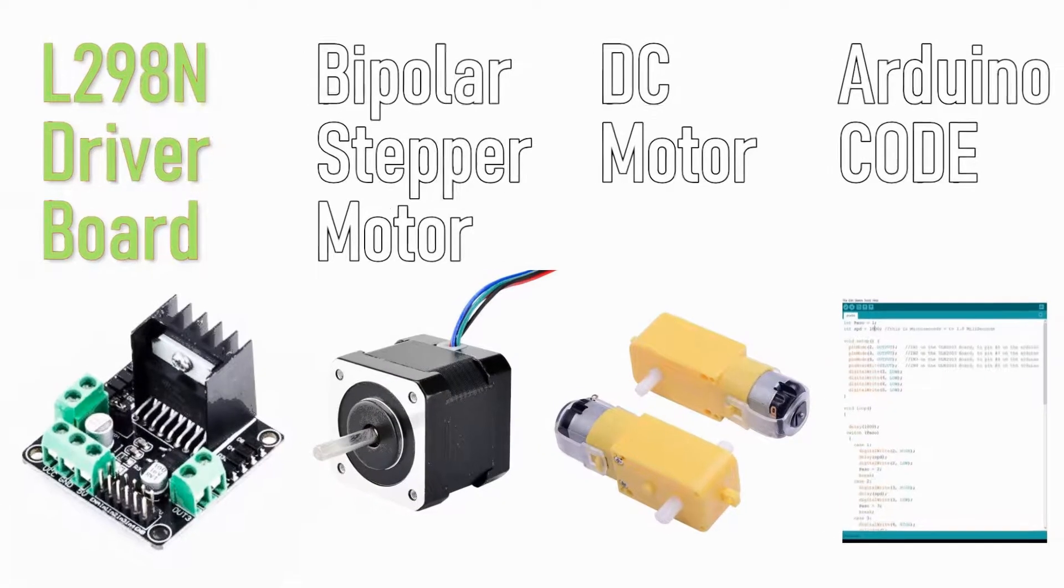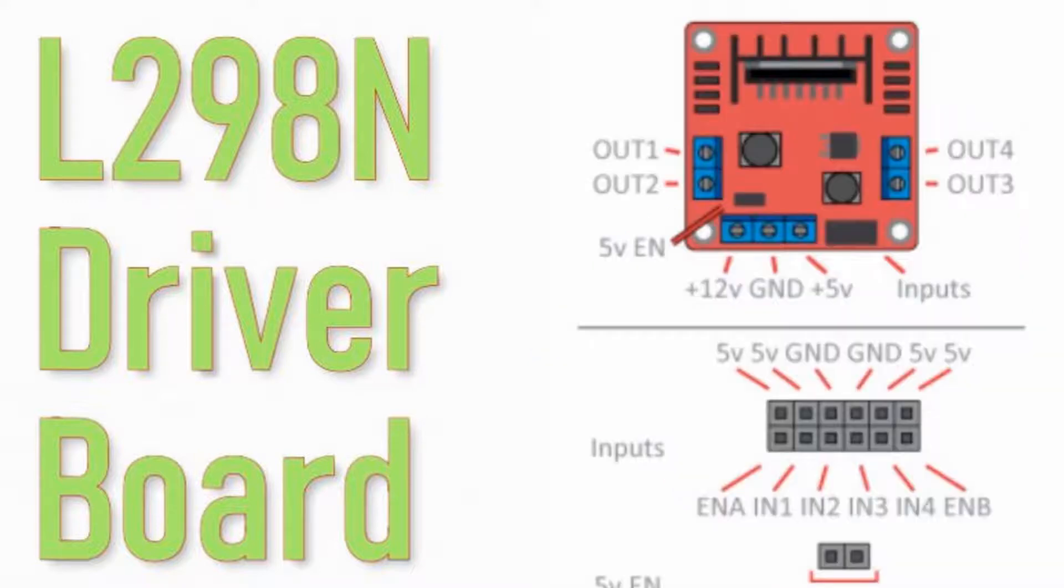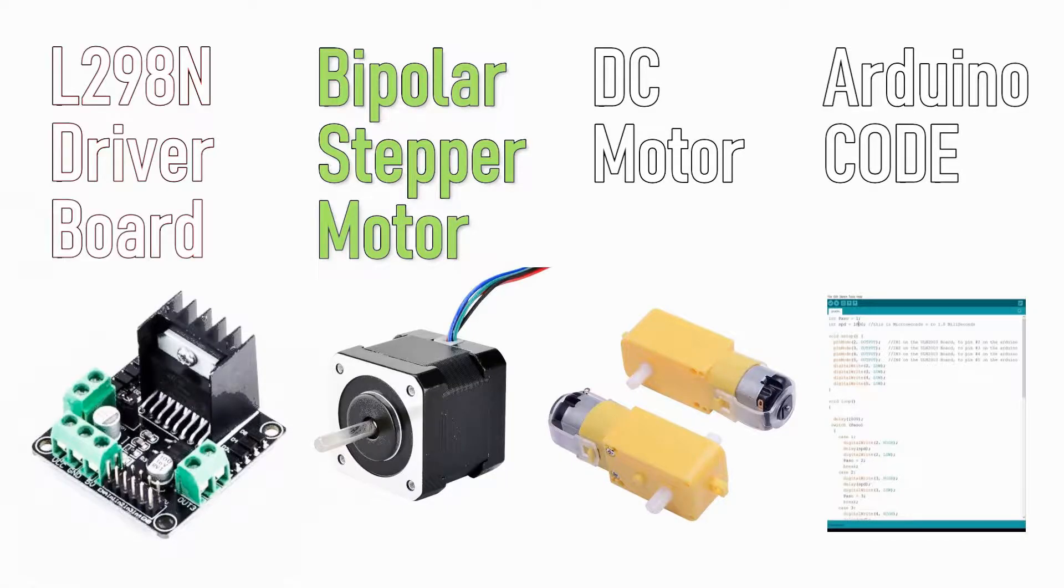There are several different boards with the transistor L298, but they connect in a similar way. This board can drive one bipolar stepper motor or two DC motors simultaneously and has the ability to control the direction and speed with the Arduino code.